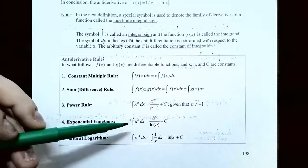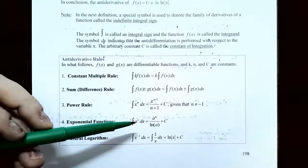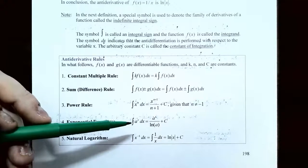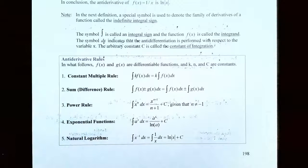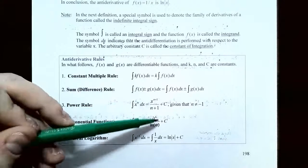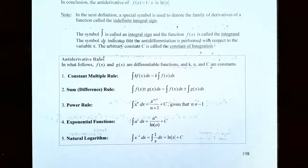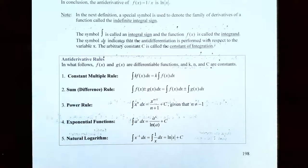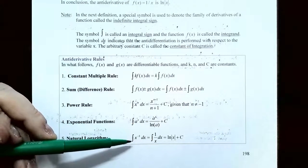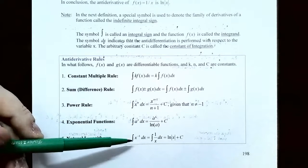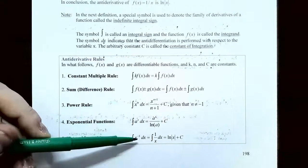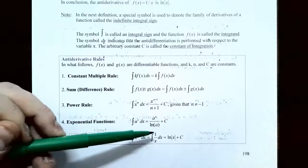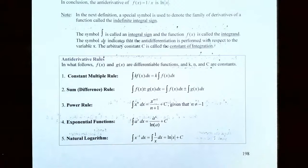Rule four covers exponential functions: the indefinite integral of a^x, where the base is a and the variable is in the exponent, equals a^x divided by natural log of a, plus C. Instead of multiplying by natural log of the base as with derivatives, you divide by natural log of the base. Rule five is the natural logarithm case: the antiderivative of x^(−1) dx — which is 1/x when moved to the denominator — is natural log of the absolute value of x plus C.